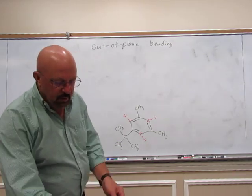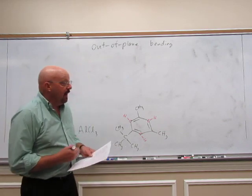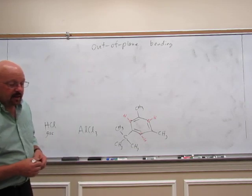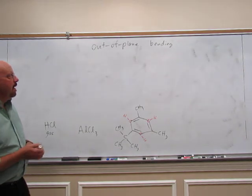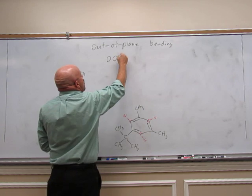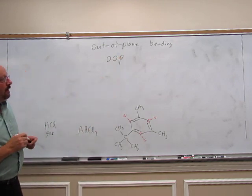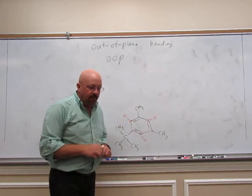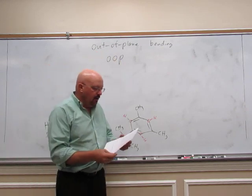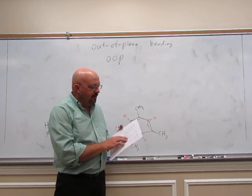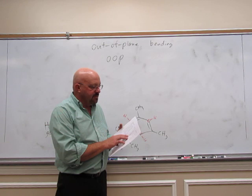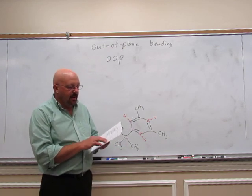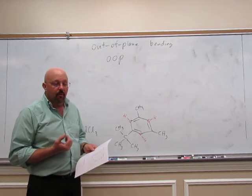The region for your out of plane bending is down about 650 up to about 870 or so reciprocal centimeters. There is a chart in your procedure on the second page. There is a chart that lists the substitution patterns. We're looking for one or two peaks down in this region, and that's going to tell us the substitution of benzene rings. Our product this week is a 1-3-5 substituted, tri-substituted benzene. So if you look at your chart, our 1-3-5 tri-substituted should have a peak between 810 and 865 reciprocal centimeters. And then there's a second peak somewhere between 675 and 730 reciprocal centimeters. That will show us that we have the 1-3-5 tri-substituted.